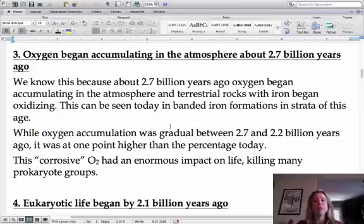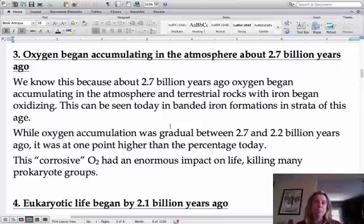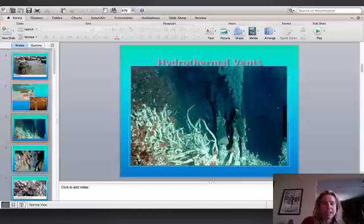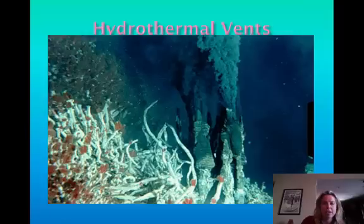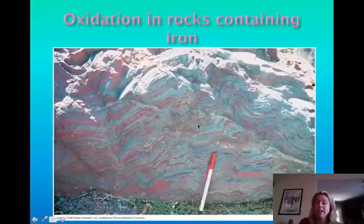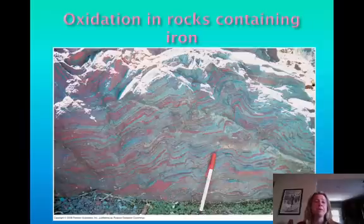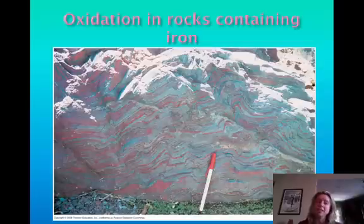One big milestone that started happening about 2.7 billion years ago is that oxygen began accumulating. The way they know this is by looking at rocks from that time that contain iron — they are bright red because they rusted, essentially oxidized. They've looked back to find the oldest rocks with that oxidation, and they're about 2.7 billion years old.